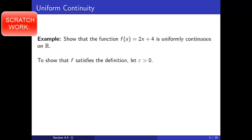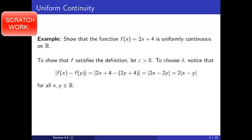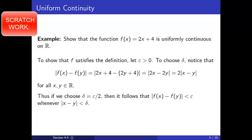To show that f is uniformly continuous on R, we let epsilon be positive. To make our choice for delta, notice that the distance between f(x) and f(y) equals the absolute value of (2x + 4) − (2y + 4), which simplifies to the absolute value of 2x − 2y, which equals 2 times the absolute value of x − y for any x and y in R. Thus, if we choose delta equal to epsilon over 2, then it follows that the distance between f(x) and f(y) is less than epsilon whenever x and y are not more than delta units apart.